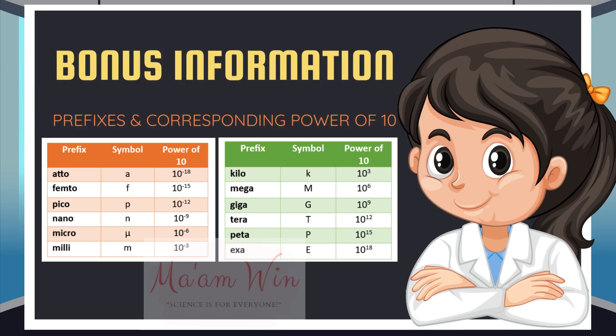Last bonus information for this quiz. Here are the prefixes and the corresponding powers of 10. For example, atto has the symbol small letter A and is 10 raised to negative 18. Micro uses the Greek symbol and is 10 raised to negative 6. Giga has symbol big letter G and is 10 raised to 9. Note that except for kilo, all letter symbols for positive exponents of powers of 10 are big letters.